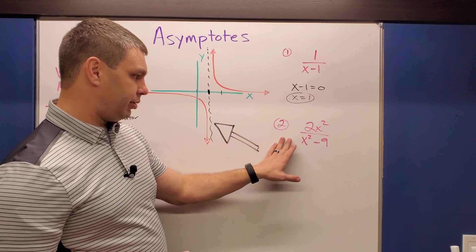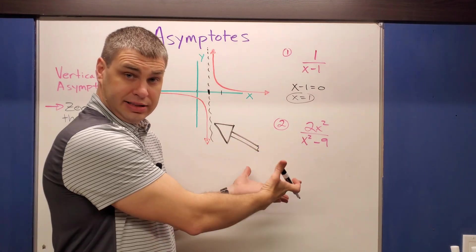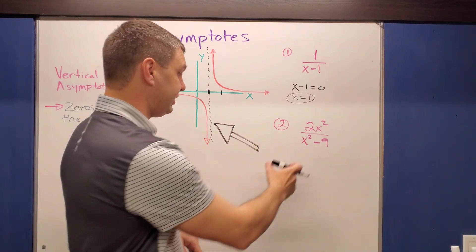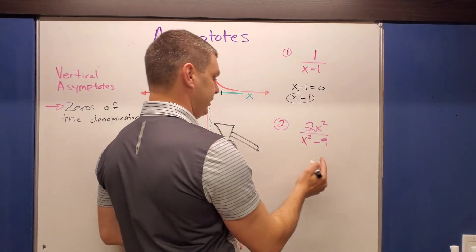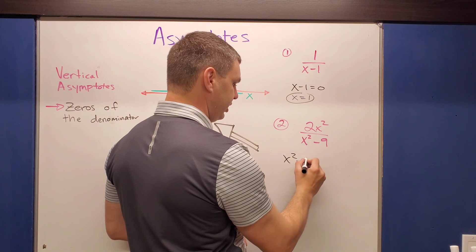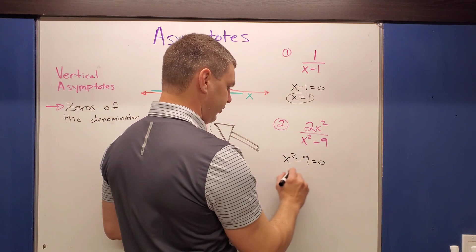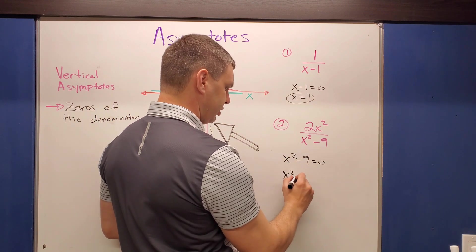Let's do another one — number two. We won't graph it, but let's look at the denominator, which is x squared minus nine. Setting that equal to zero, I have x squared on one side.